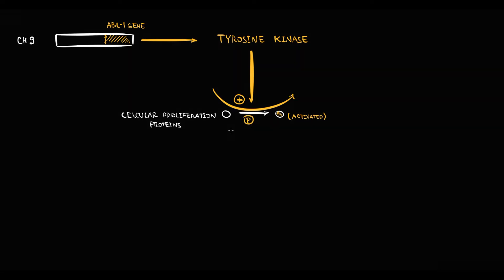Recall that we have chromosome 9, and on chromosome 9 is located the ABL1 gene that encodes a specific enzyme called tyrosine kinase. The function of tyrosine kinase is to activate proteins that are responsible for cellular proliferation. Activation of proteins occurs by phosphorylation. Tyrosine kinase uses ATP molecules and phosphorylates proteins.